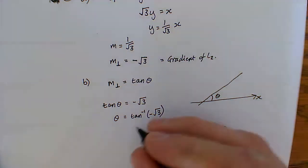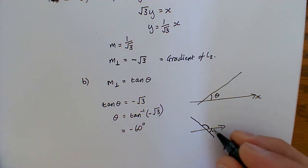And then that gives us minus 60 degrees. So this angle here is 60 degrees, but we want that one there, because we were asked for, calculate the angle L2 makes the positive direction of the x-axis.